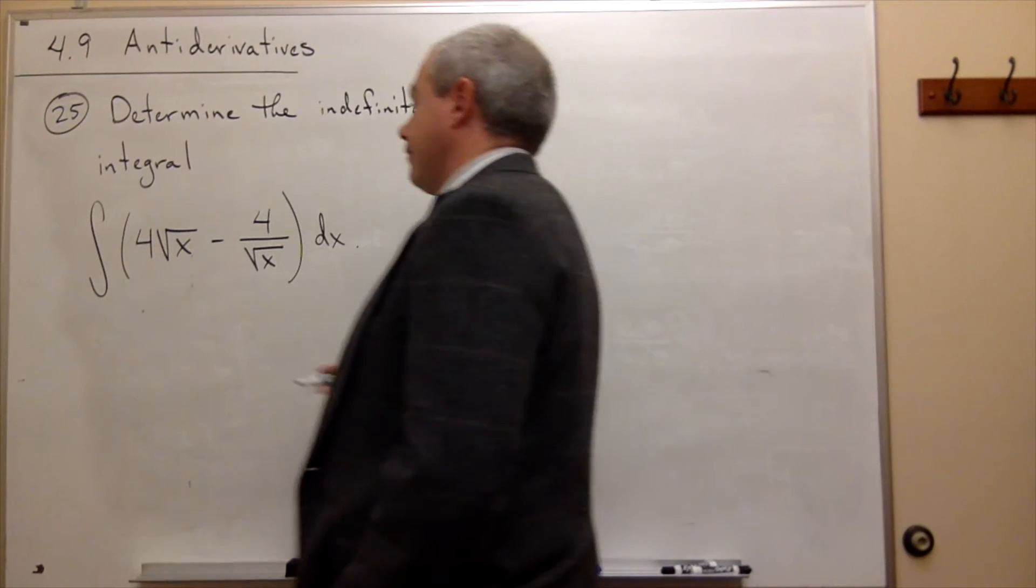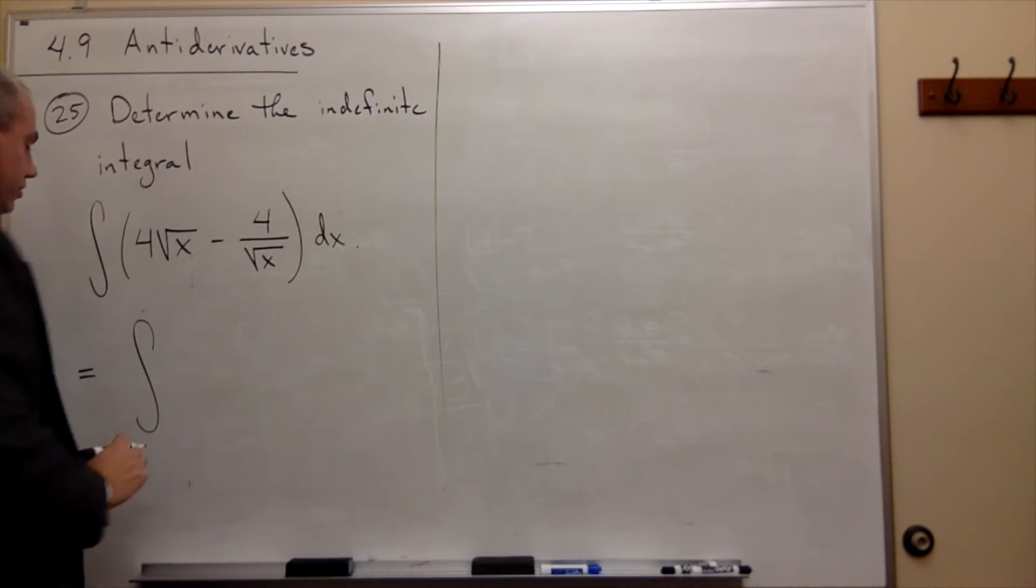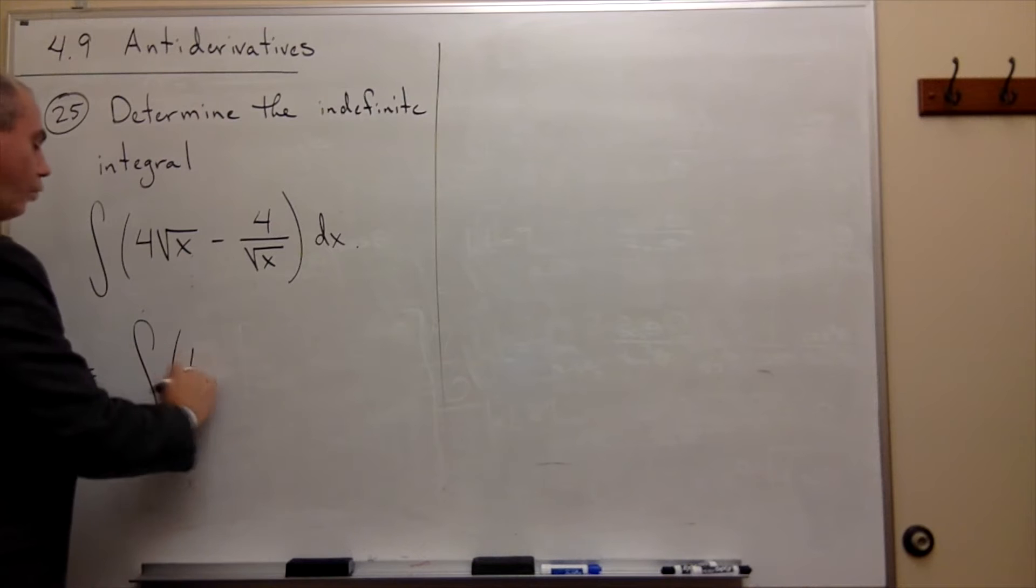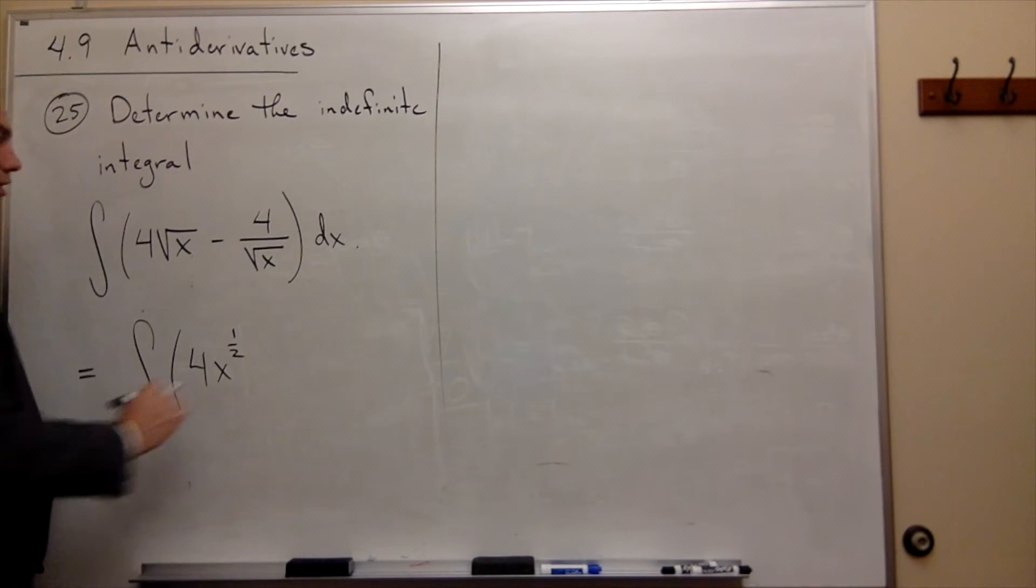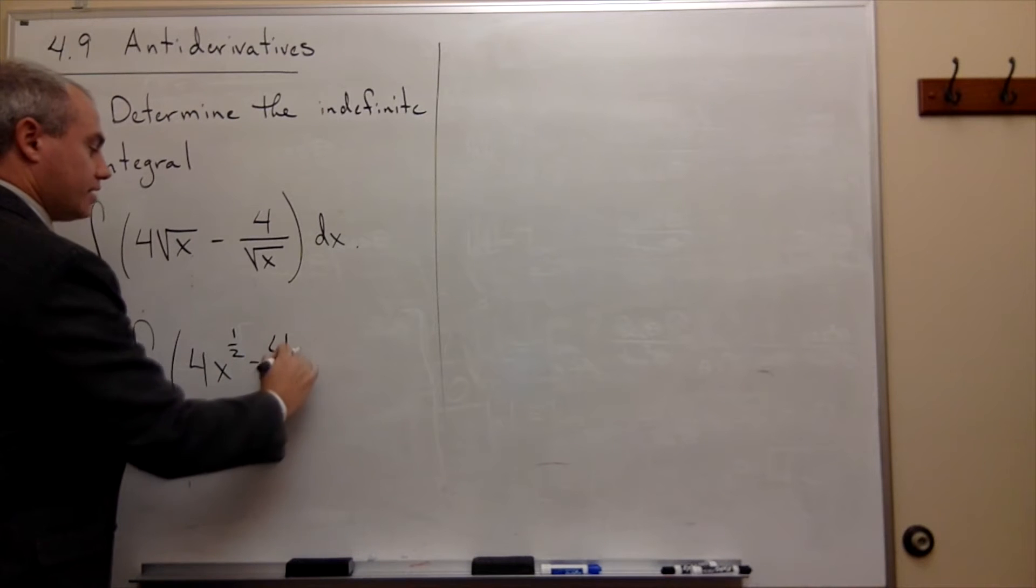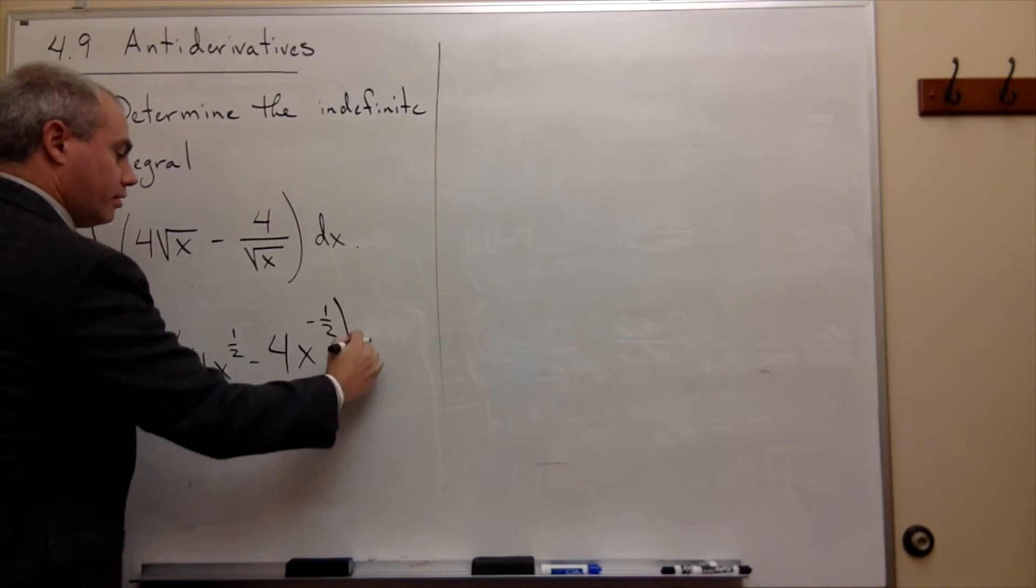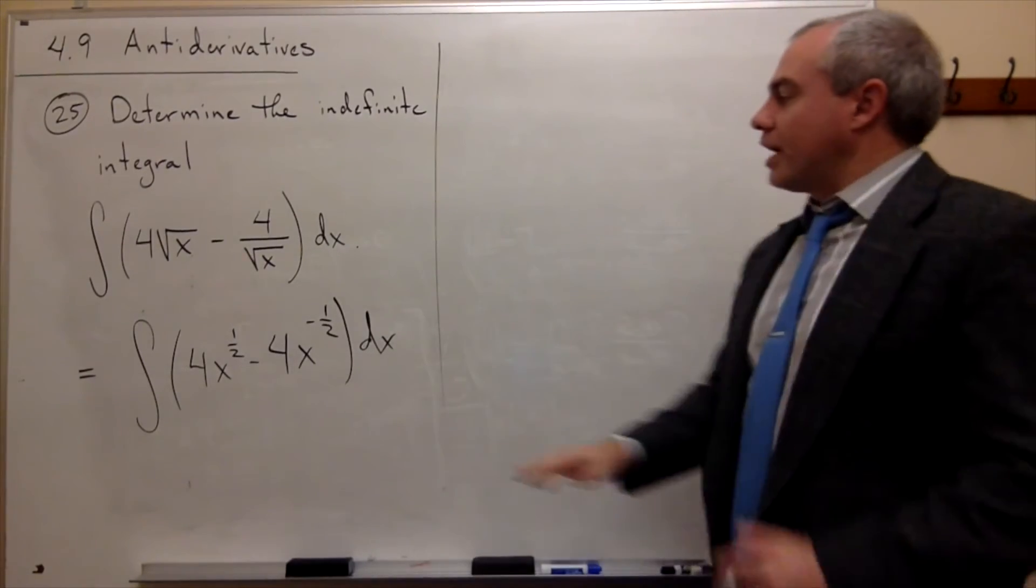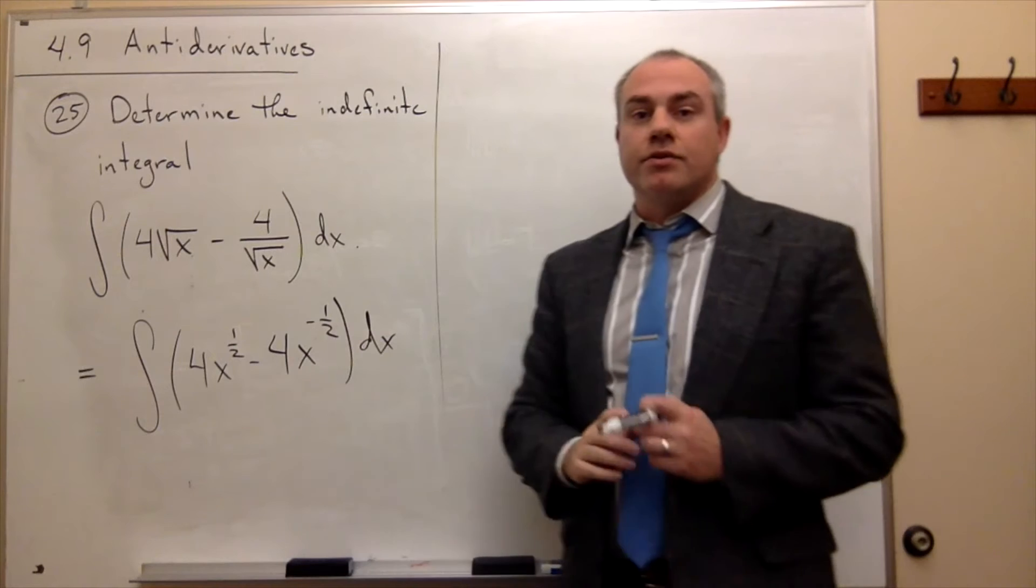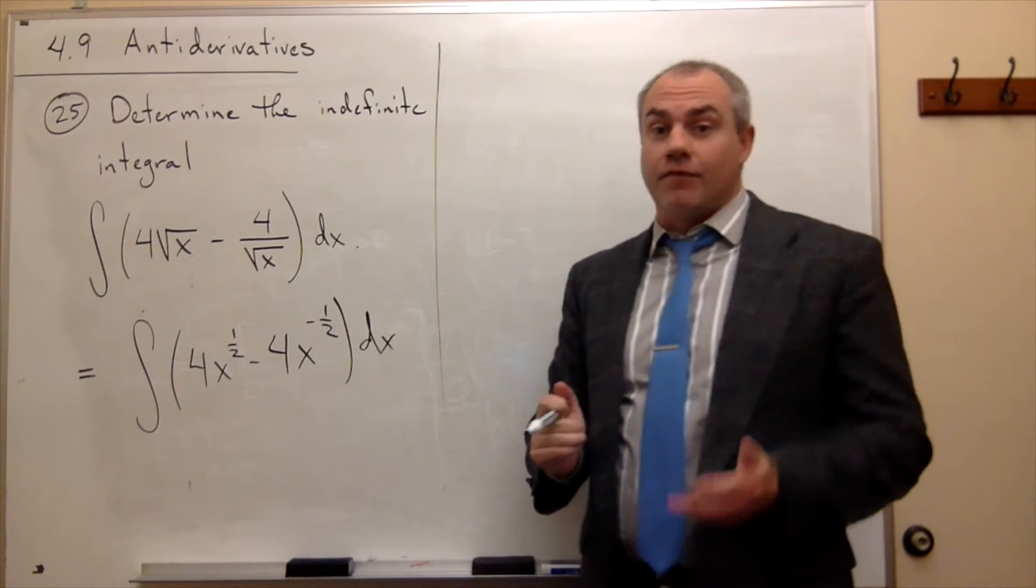So if I rewrite this thing, I could rewrite it this way. This is the integral of 4 times x to the 1 half power minus 4 times x to the negative 1 half power dx. I just rewrote this using powers of x instead of having any square roots involved.